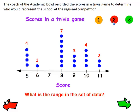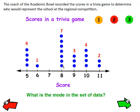What is the range in the set of data? Remember, the range is when you take the largest number, which is 11, and you subtract the smallest number, which is 5. The difference is 6, so the range in that set of data is 6. What is the mode in this set of data? The mode is the number that's listed the most. You can see that the score of 8 was listed more times than all the rest, so the mode in this set of data is 8.